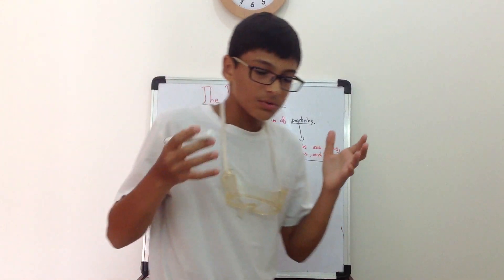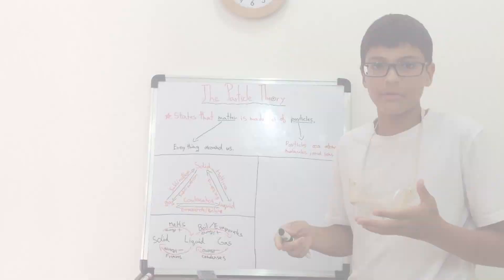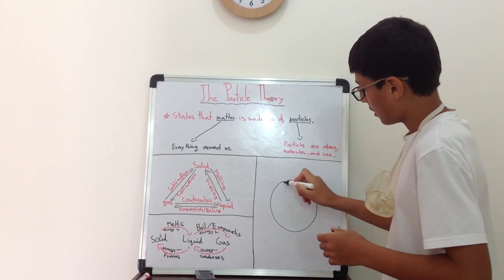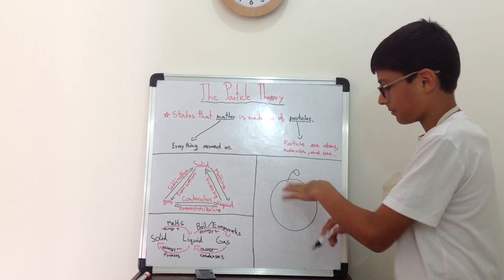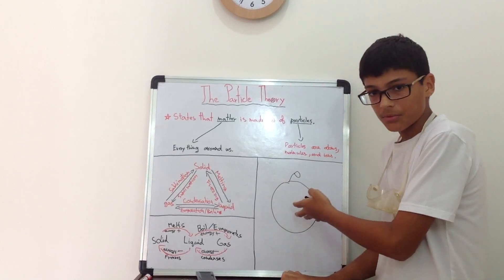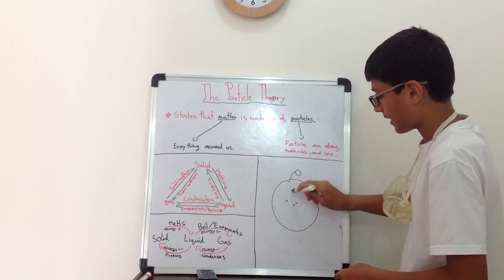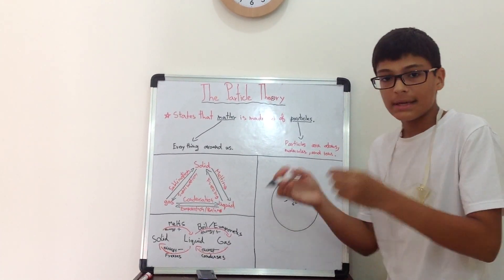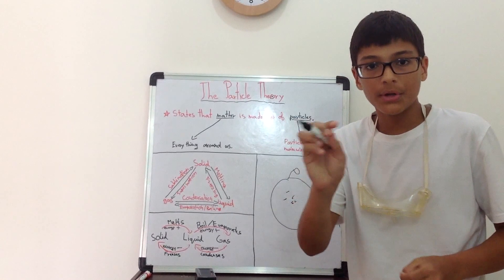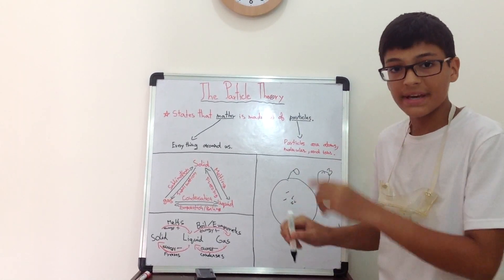Now, atoms, molecules and ions, how small are they? I would like you guys to imagine a grapefruit. This is a grapefruit. Now imagine this grapefruit is only made of a certain type of atom. And now we take every atom and we blow it up to the size of a blueberry.